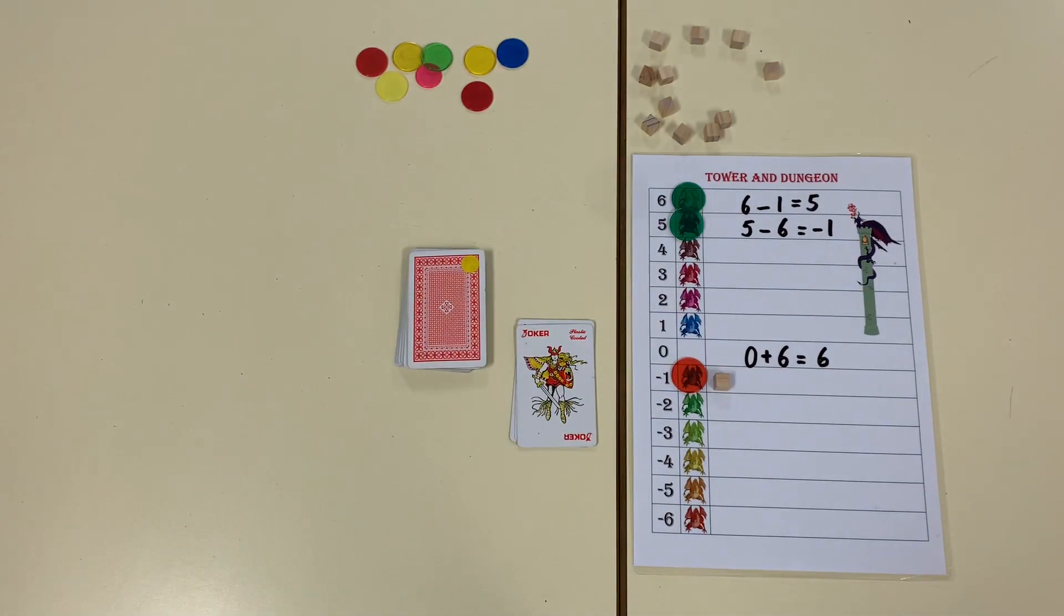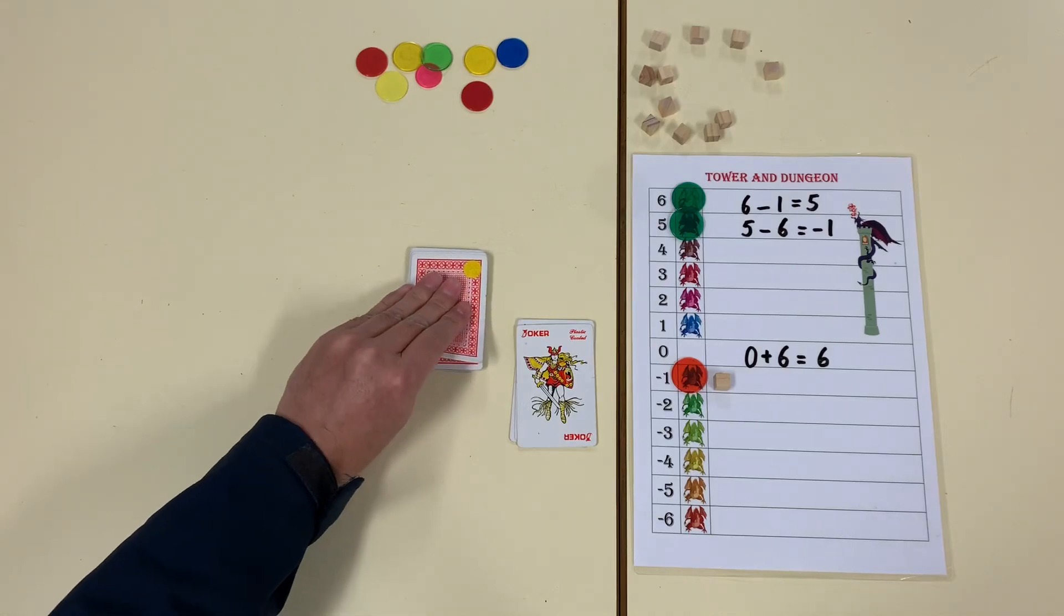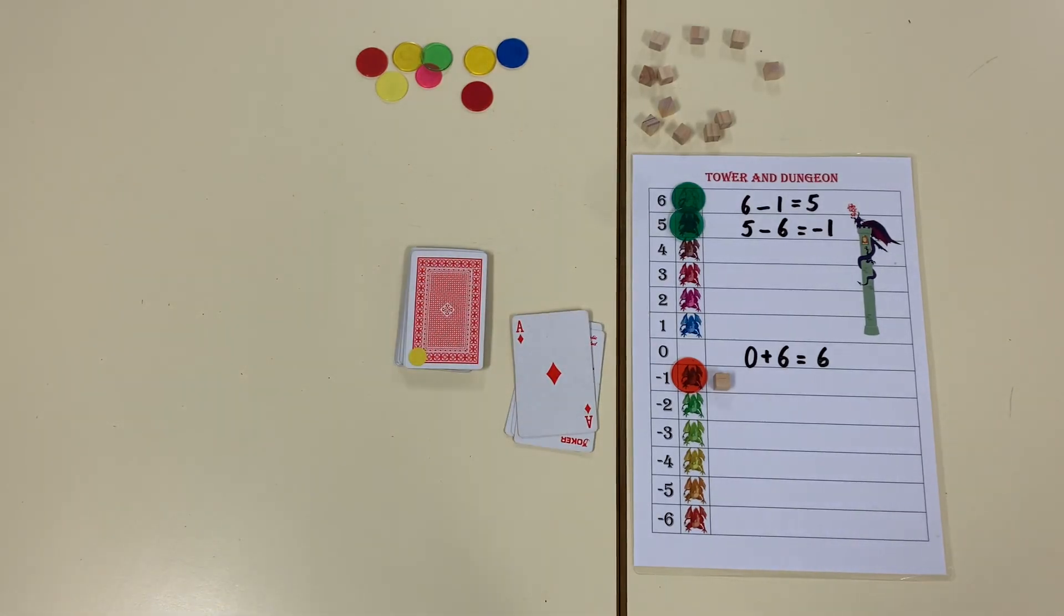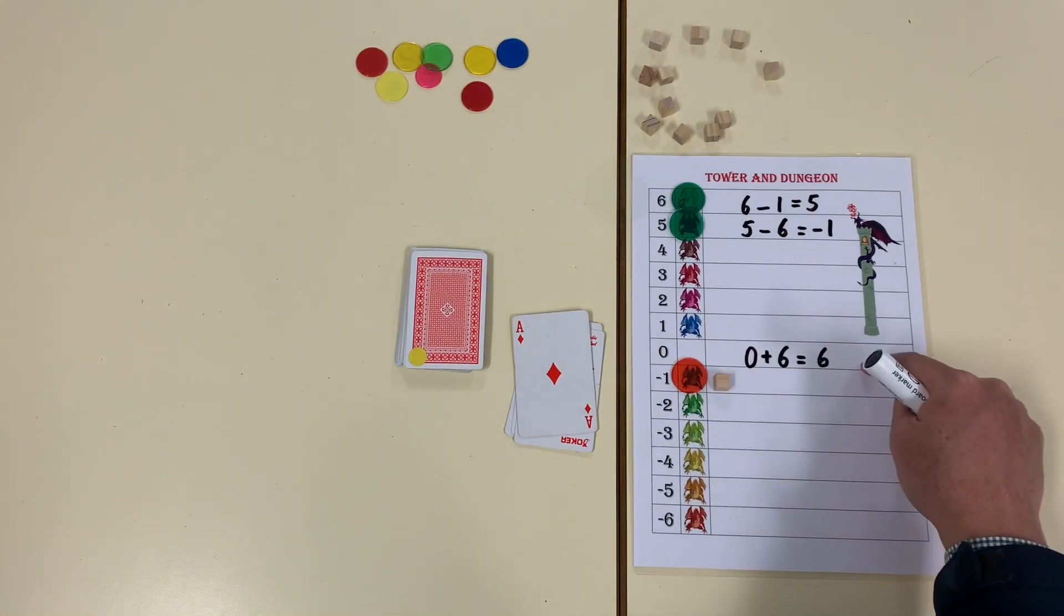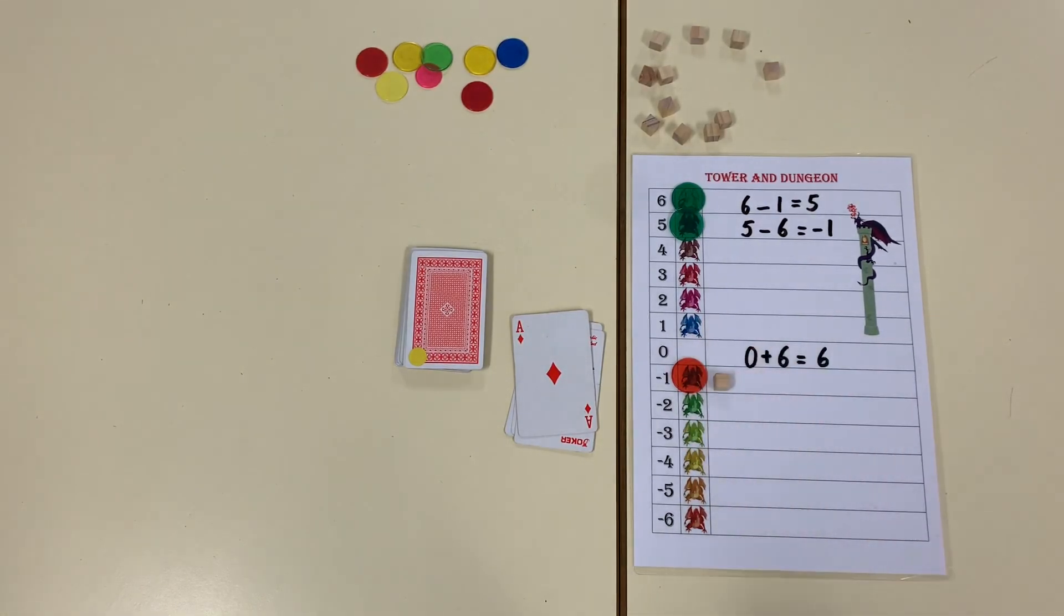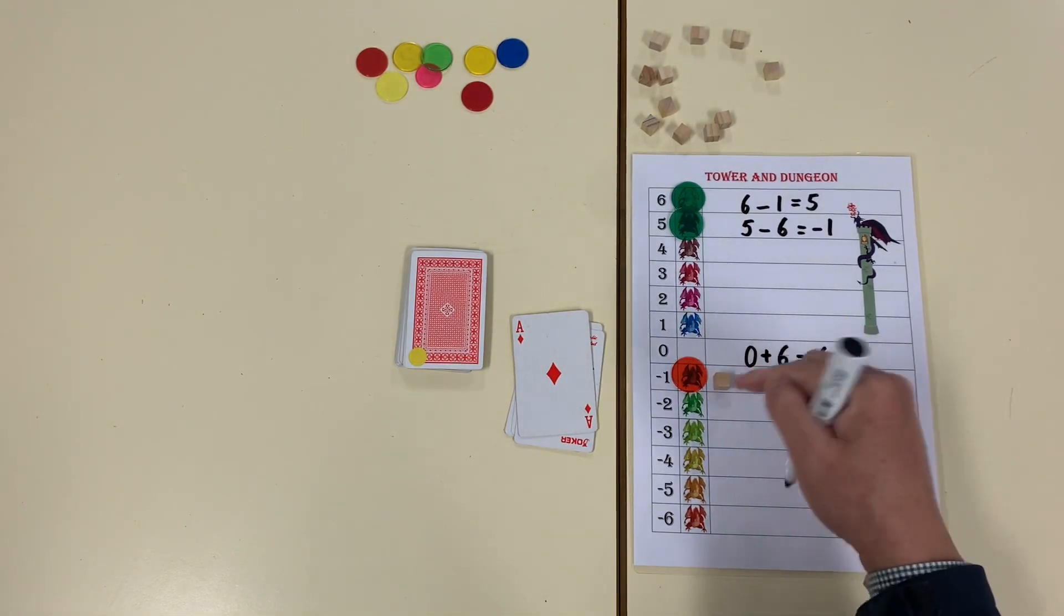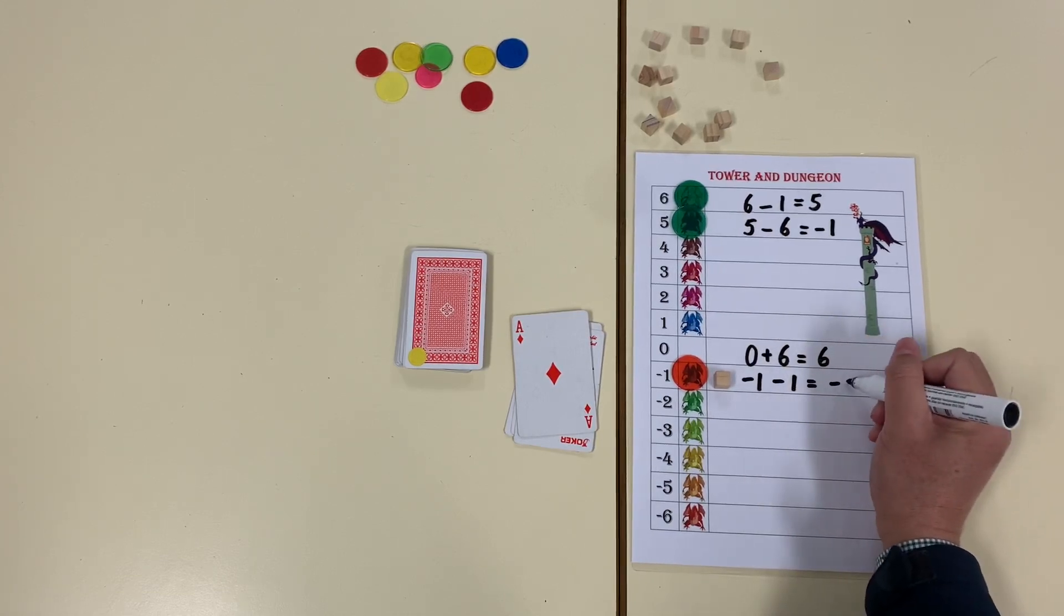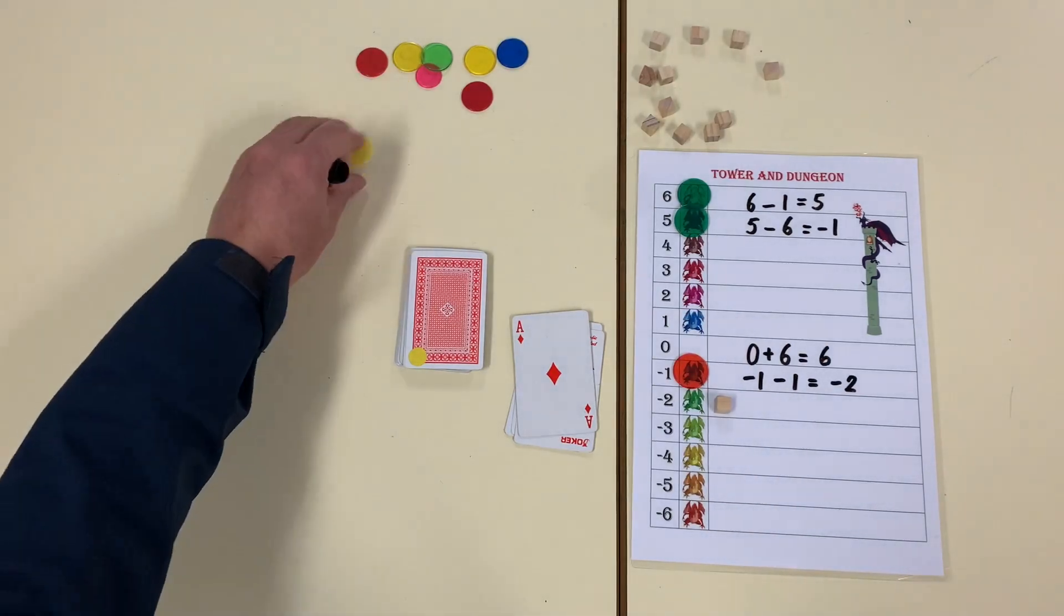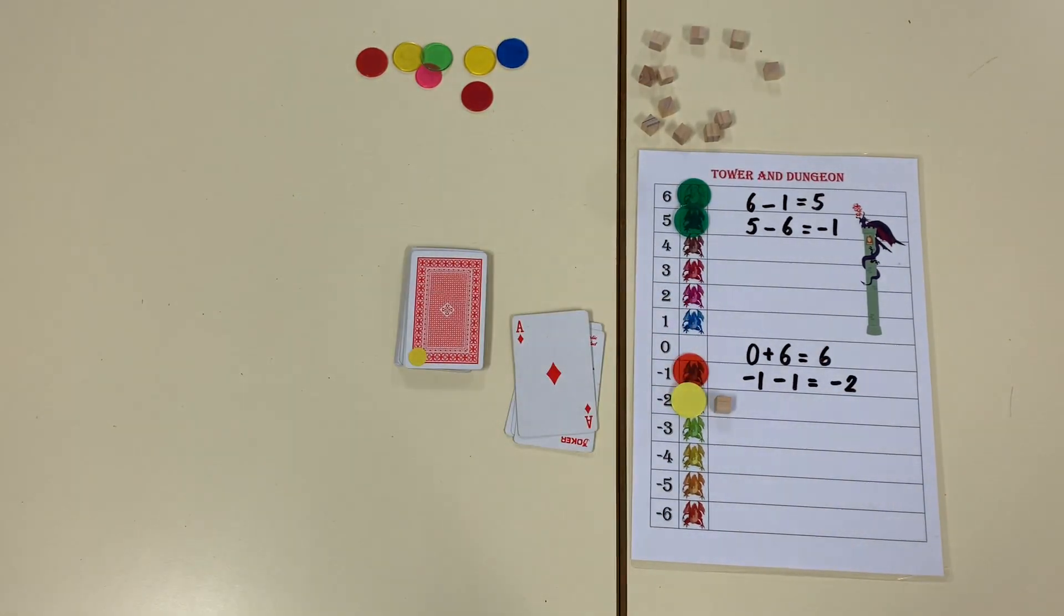Now it's your turn. Next I pick a new card. An ace. I have already been to the floor zero and there's no dragon there. I'm going to go down. I'm on minus one. I'm going down one. I'm going down one again. Minus two. So this is the dragon I slayed. Now it's your turn.